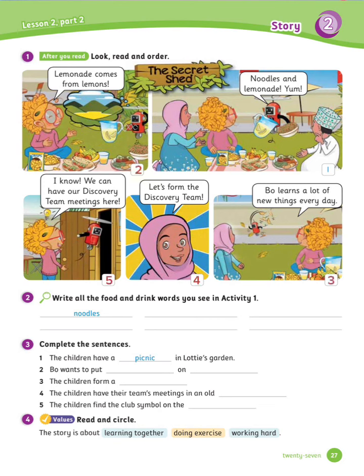Exercise number 2: Write all the food and drink words you can see in Activity 1. The words are: noodles, lemonade, crisps, sandwiches, salad, fruit.